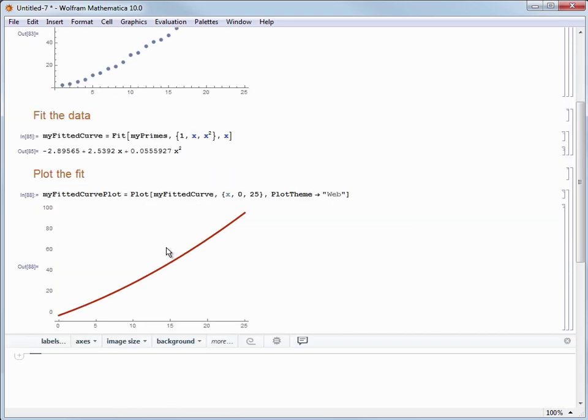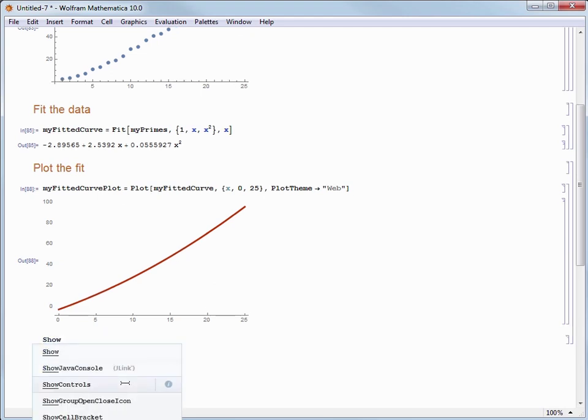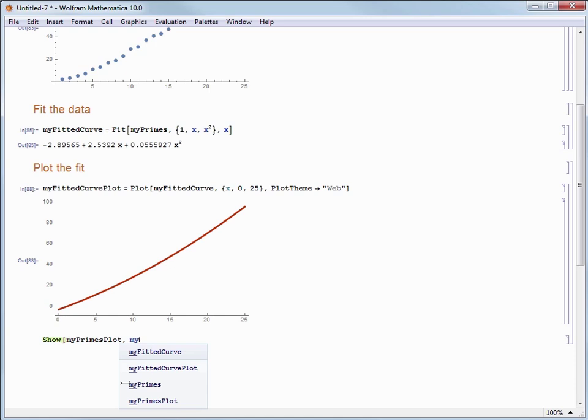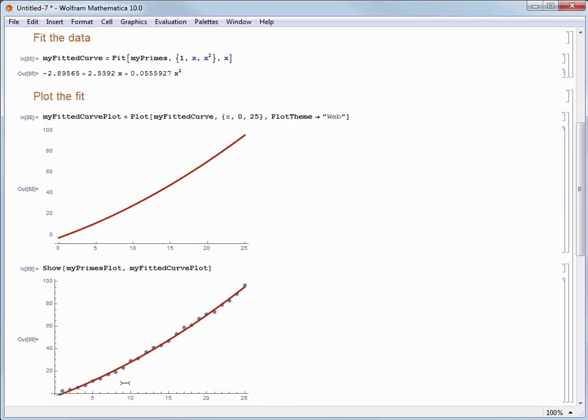We can combine these two different types of plots together by using the show command. So let's do show open square bracket my primes plot and then also with a comma my fitted curve plot. Close that square bracket. Hit shift enter. And now we've got them together so we can see them on the same set of axes.